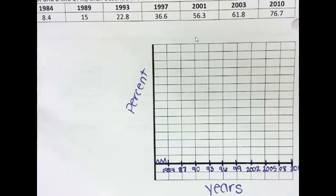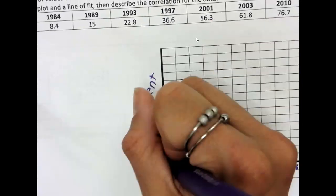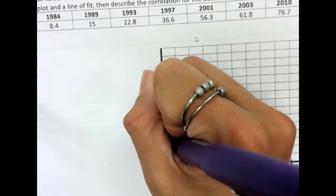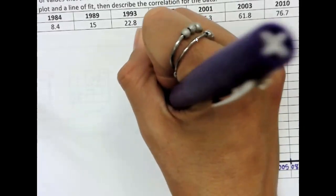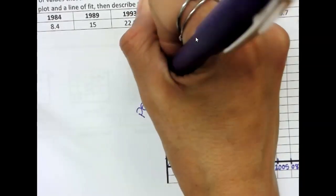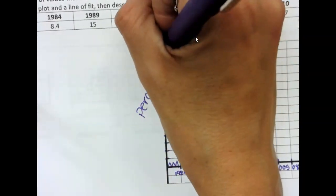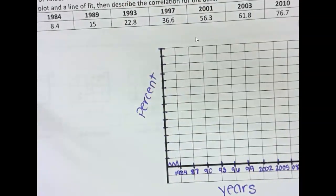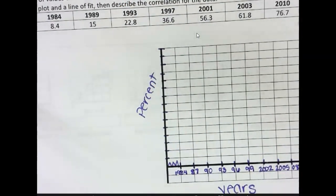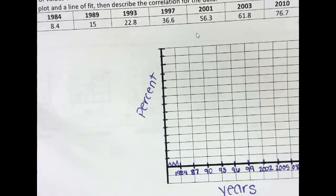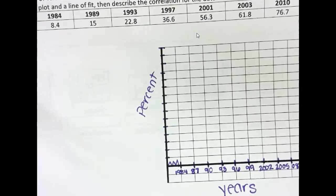And for percents, we have 1, 2, 3, 4, 5, 6, 7, 8, 9, 10, 11, 12, 13, 14, 15 blocks for percents. And we need to get to about 80. So, you could go by fives because 15 times 5 is going to get you 75. So, you're going to be just shy of your 76.